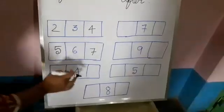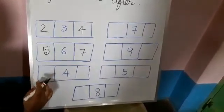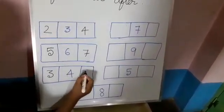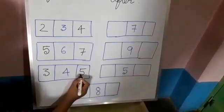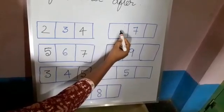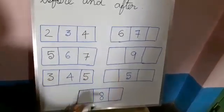Next, here is 4. Can you tell me what comes before 4? Before 4 we get 3 and after 4 we get 5. Similarly, here is 7. What comes before 7? We get 6. What comes after 7? We get 8.